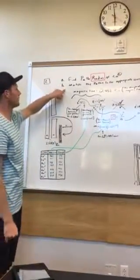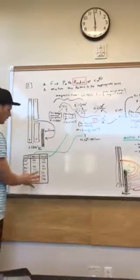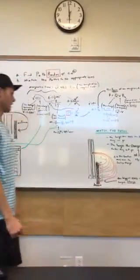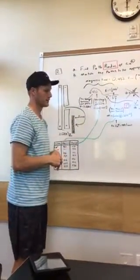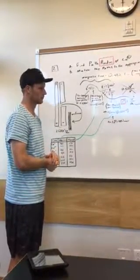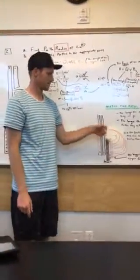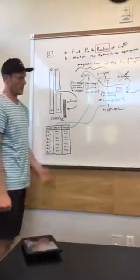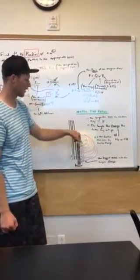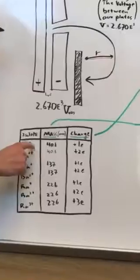The second question asks us to match the paths on here to the appropriate ions. I drew out all the paths. Since we've already done all this work, we know how we get our radius. The smallest path is going to be the one that has the smallest mass and the smallest charge. The smallest mass was calcium, and its charge is 1.